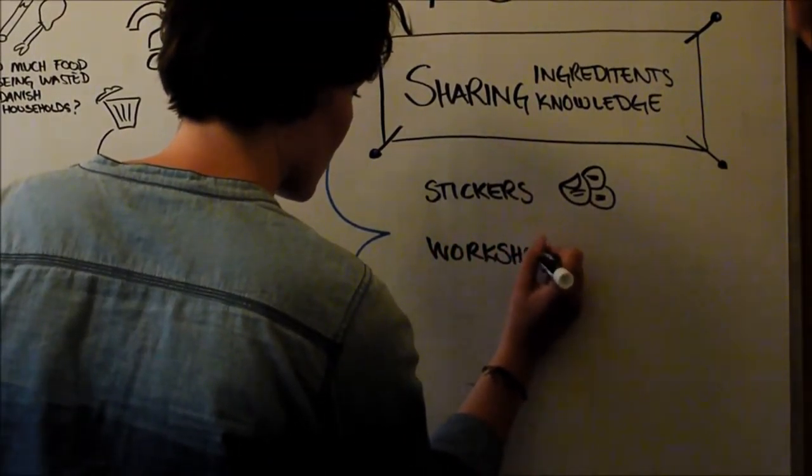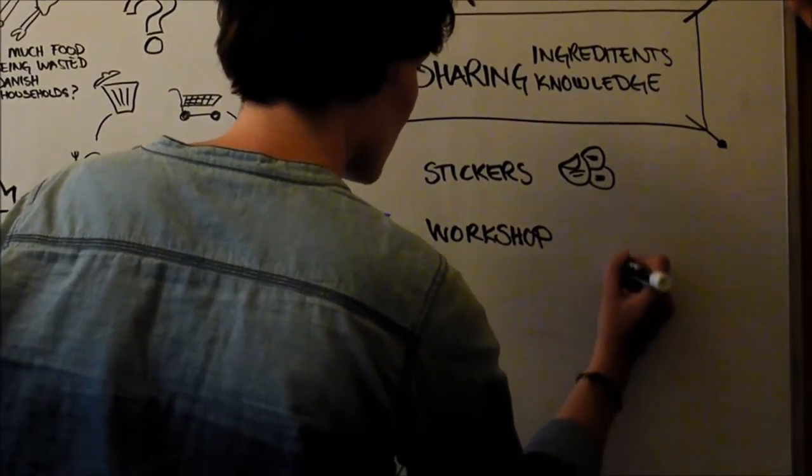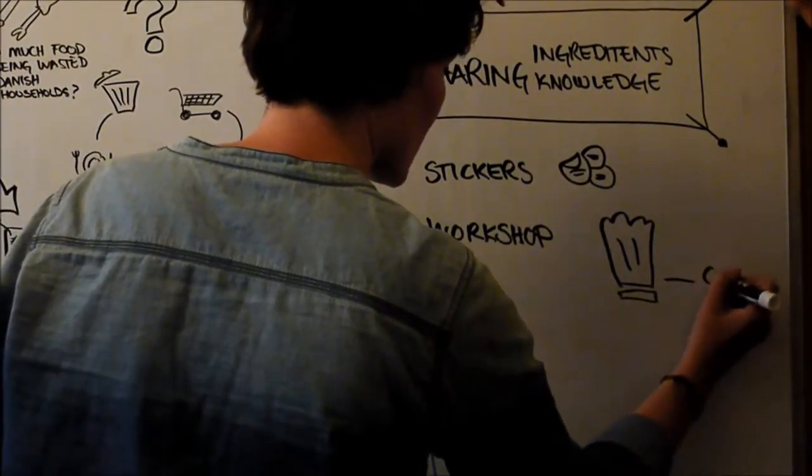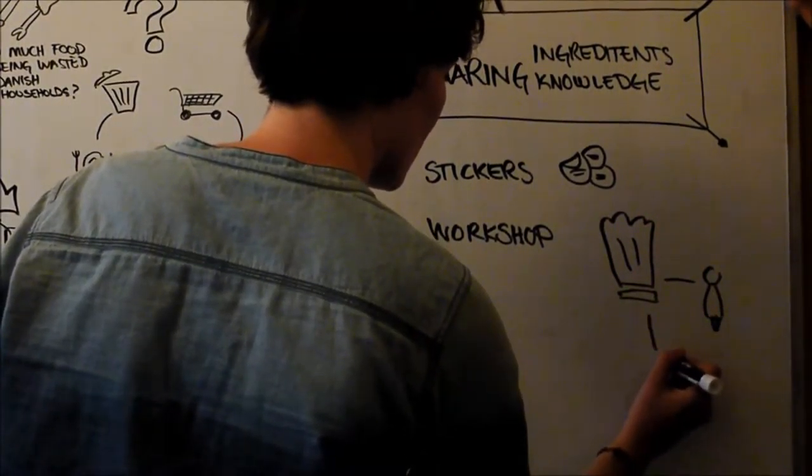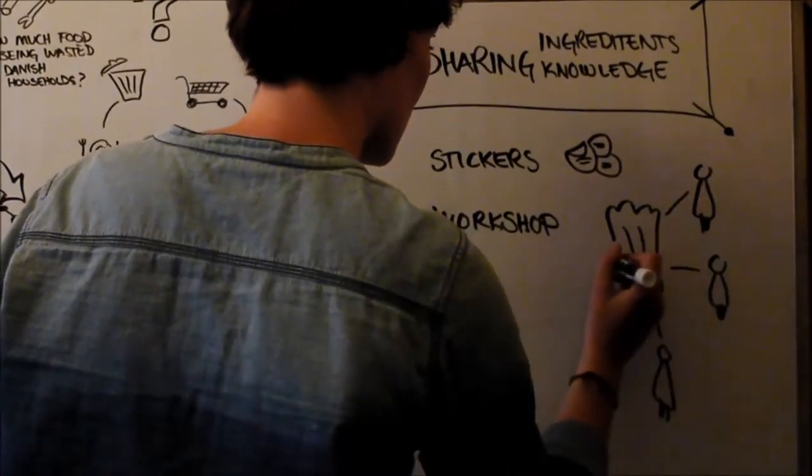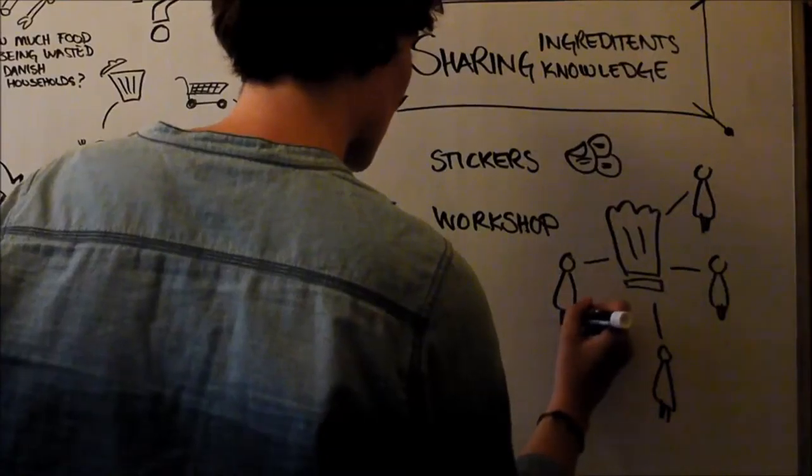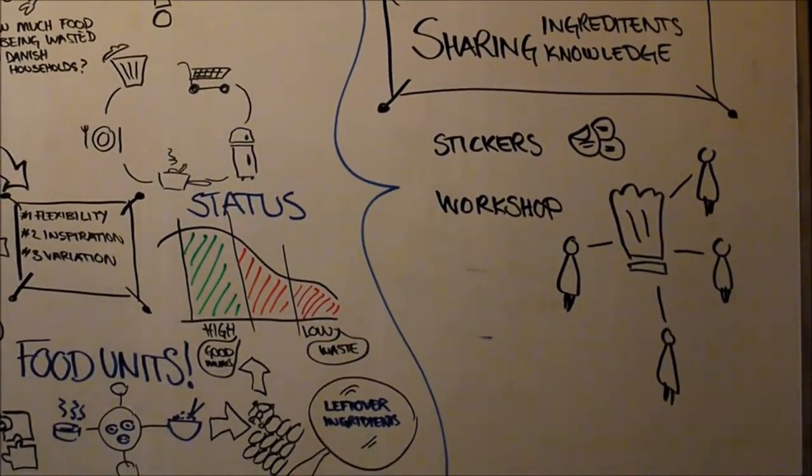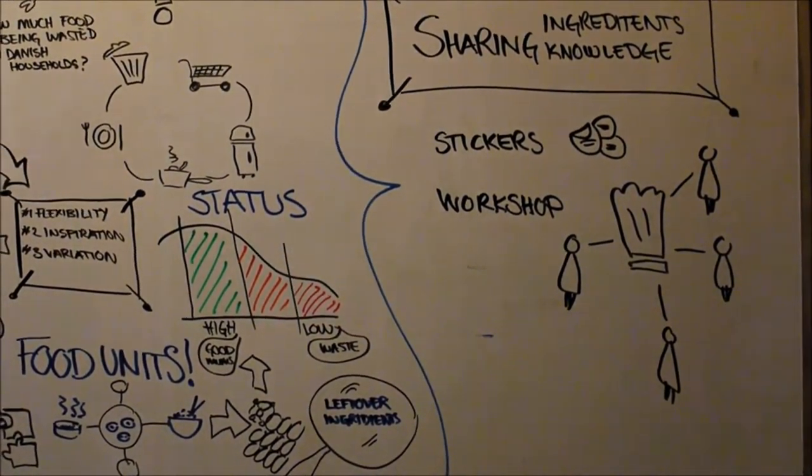The second element is a workshop that deals with the sharing and social aspect of cooking. In the workshops, participants will create courses together out of leftovers by peer-to-peer teaching. They will inspire each other to cook in new ways and question their existing relationship to their leftover ingredients.